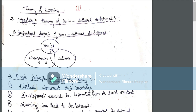This is a sociocultural development theory — a Russian psychology theory. There are three aspects of the theory.